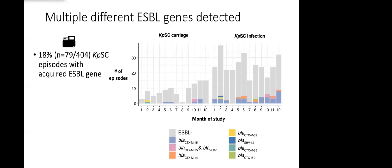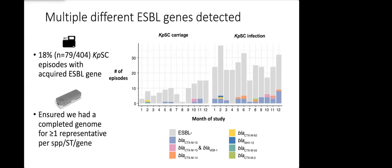To get at what plasmids were carrying these ESBL genes we then went and did an additional round of sequencing where we selected genomes to do Nanopore sequencing on. The way we selected genomes is we made sure that we were going to have at least one completed genome per species sequence type and ESBL gene combination.